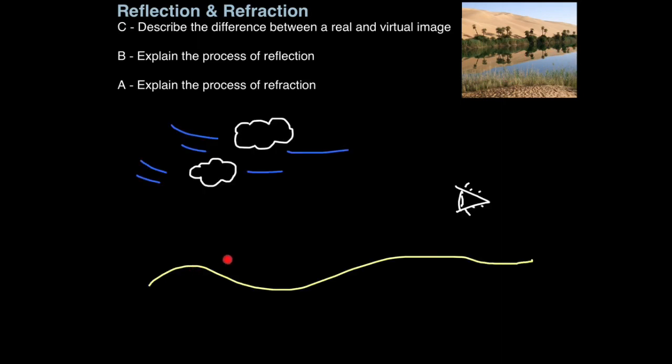You see, in a desert, it's very hot near the ground. As a result, the air is less dense, the particles have more energy and they spread out. The further away you get from the ground, the more dense the air gets, because it's cooler, so the particles are closer together.